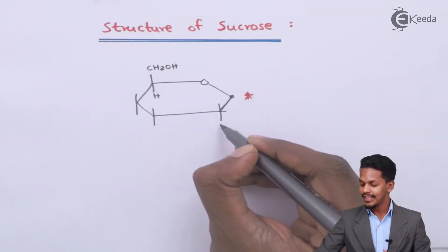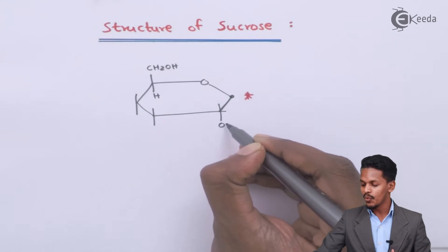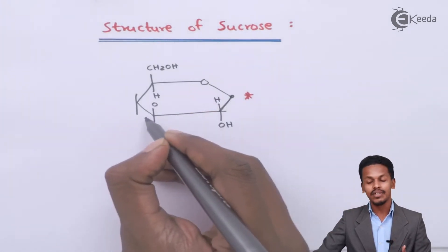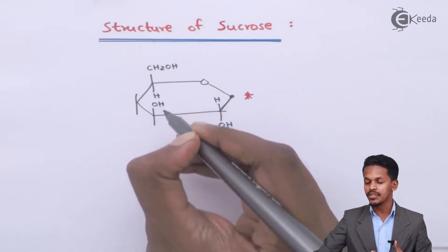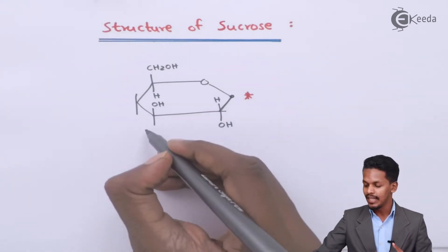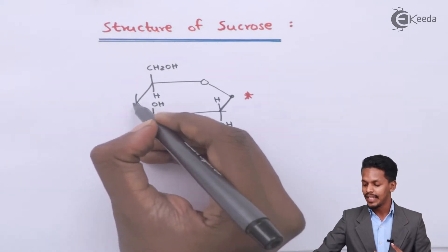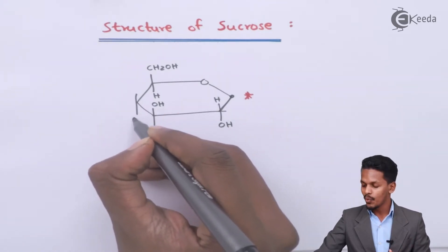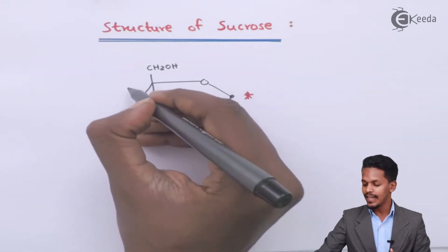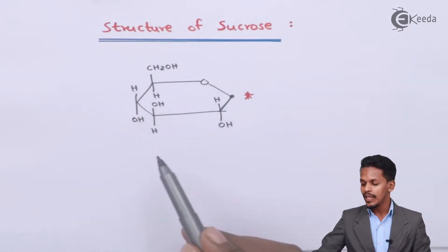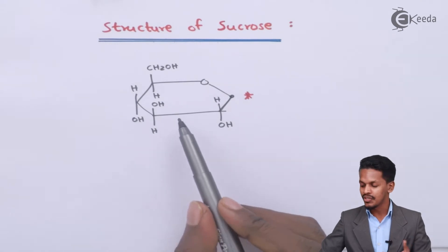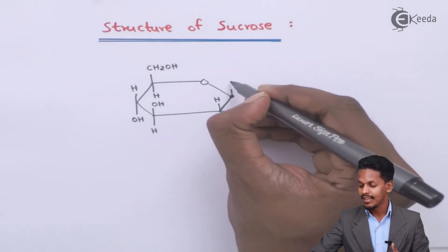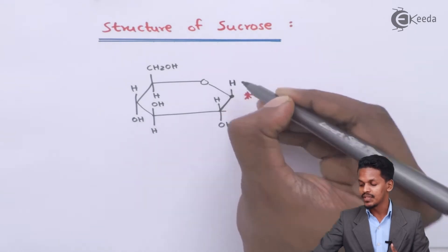The second carbon atom consists of OH and a hydrogen atom attached to it. The third carbon atom has OH on the upper side and hydrogen on the lower side. The fourth carbon atom has an OH group on the downward side and H on the upper side. This is the alpha-glucopyranose structure, but it is not confirmed unless we add a hydrogen on the first carbon atom — so for alpha-D-glucopyranose there should be an attachment of OH.